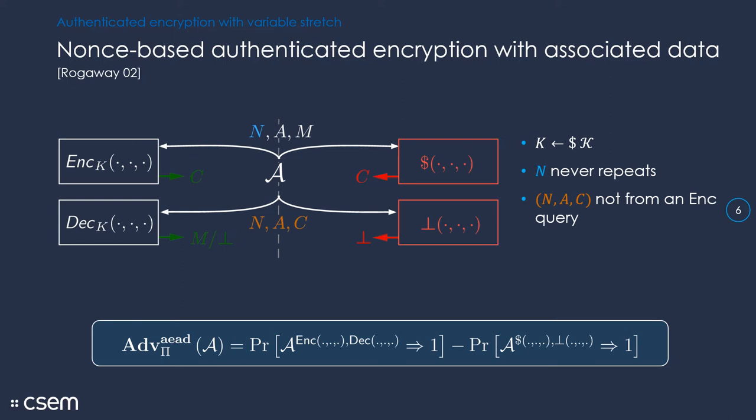The security of authenticated encryption has been formalized as indistinguishability of encryption and decryption that is made available to the attacker as a black box using some secret key, from a pair of oracles where the fake encryption oracle returns random strings which are completely independent from the oracle inputs, and the fake decryption oracle always rejects. So it always returns the rejection no matter what the adversary queries. And as long as the attacker does not repeat nonce to the encryption queries, and does not try to decrypt a ciphertext tuple that is known to be correct trivially, these two systems should be hard to tell apart.